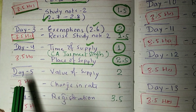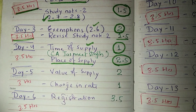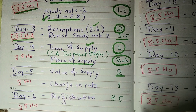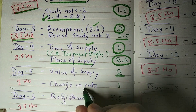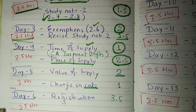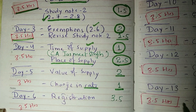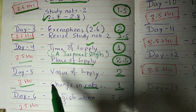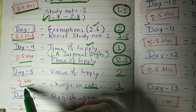Coming to day number 5, value of supply is also a big chapter and I have allocated 2 hours for it. Change in rate is a small topic of about 4-5 pages and will take maximum one hour. So day 5 total is 3 hours, and day 4 is 3.5 hours.